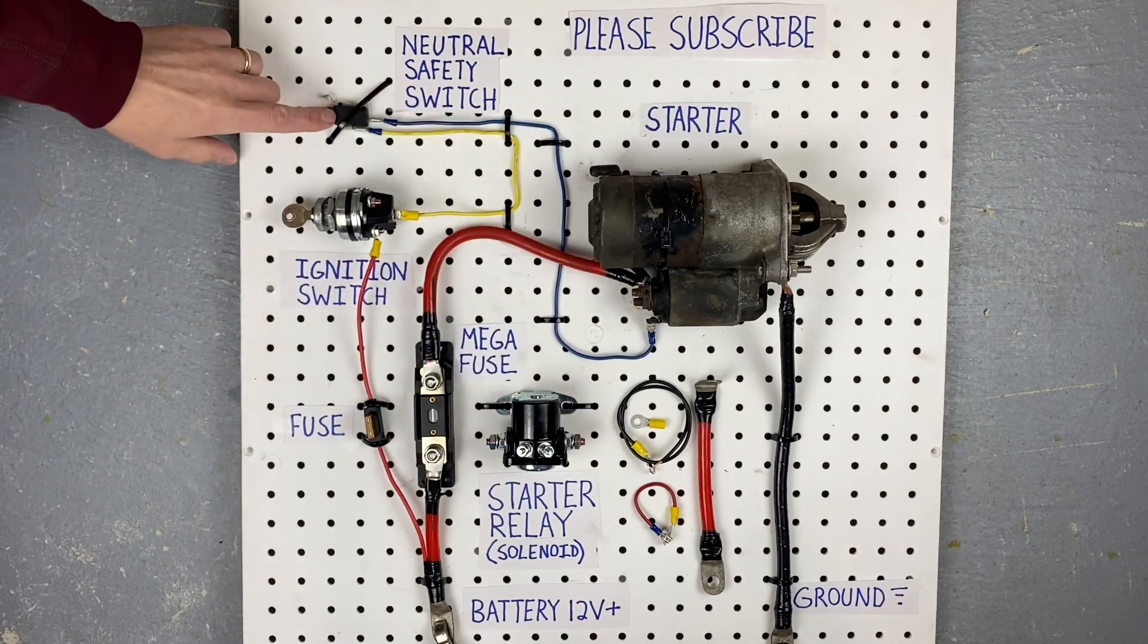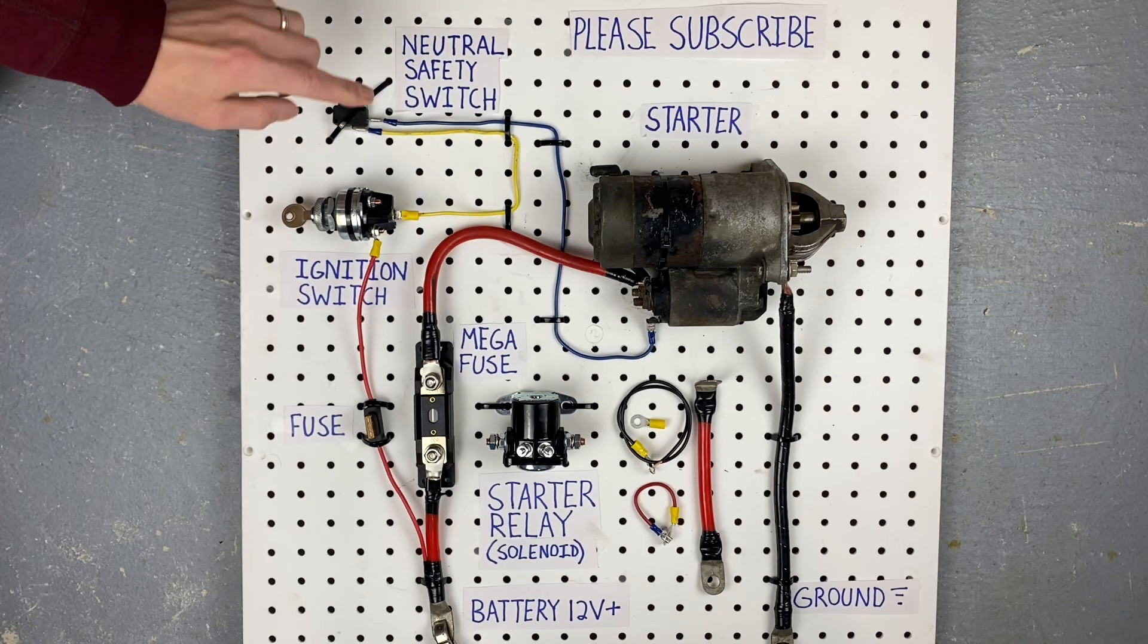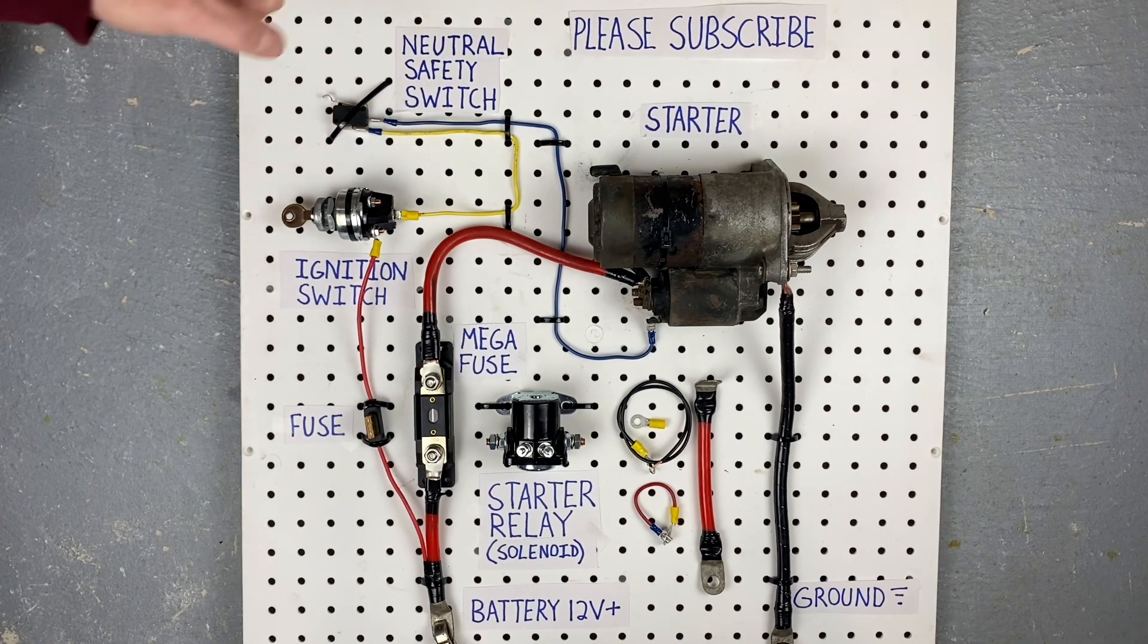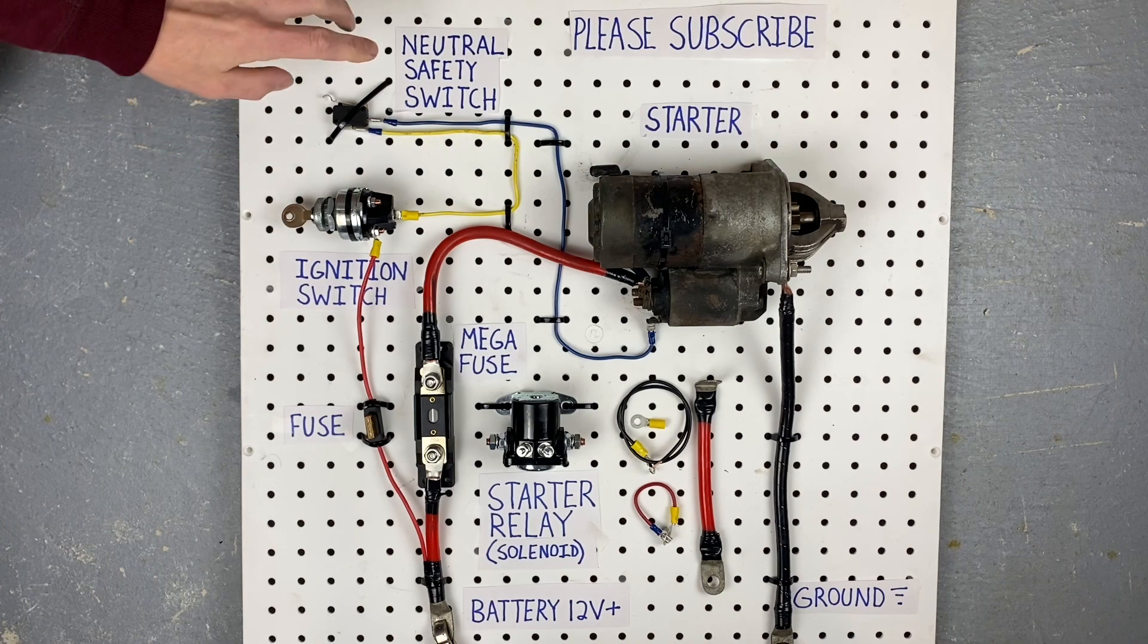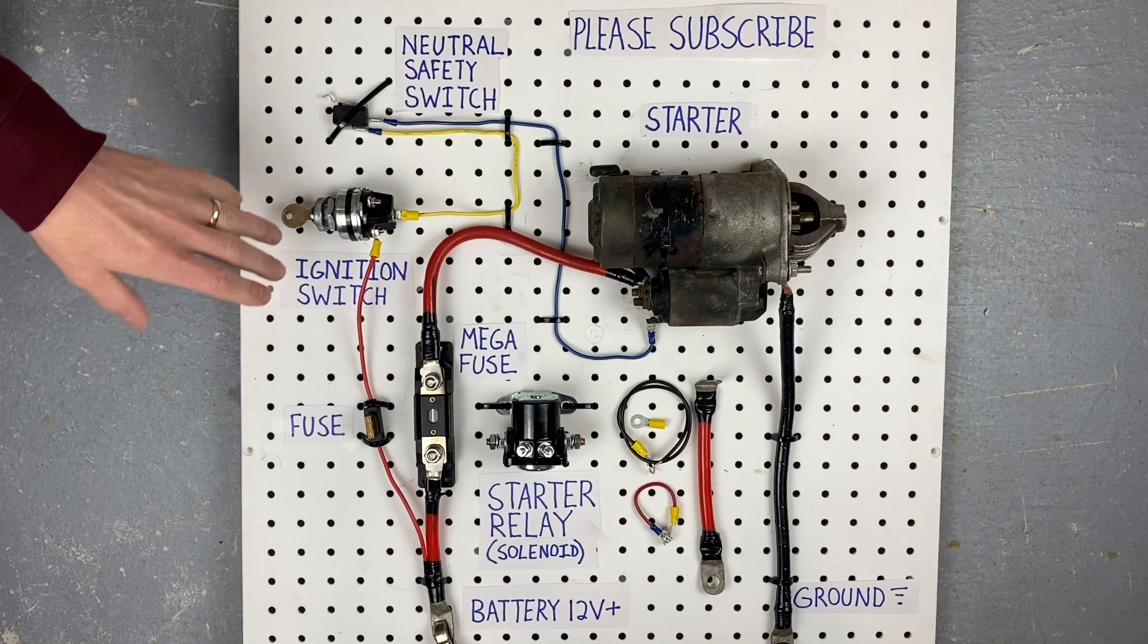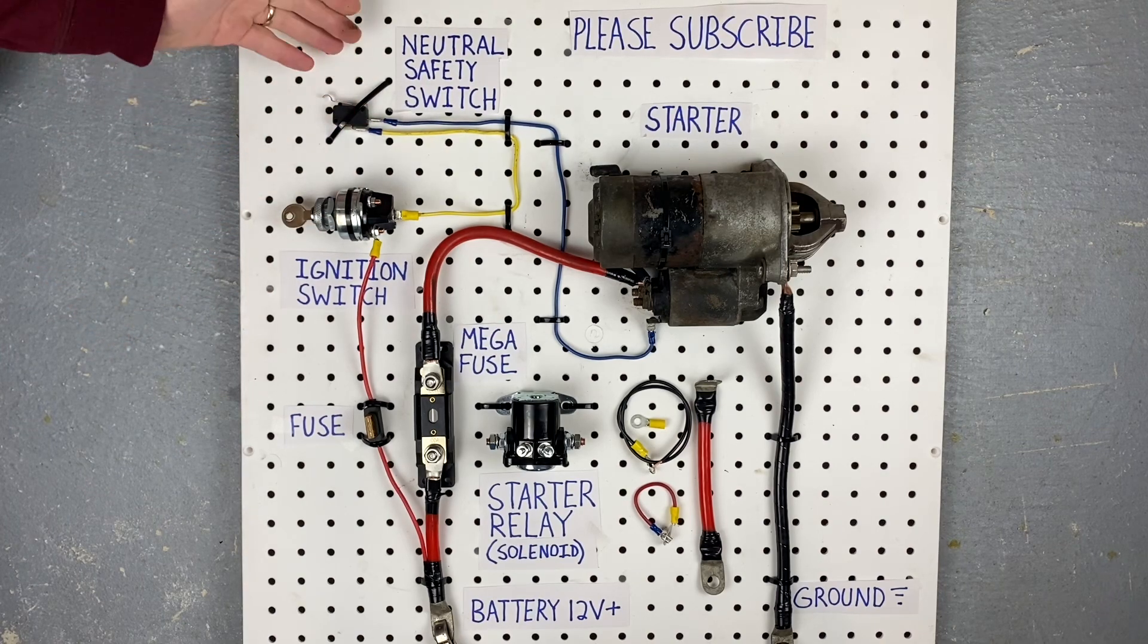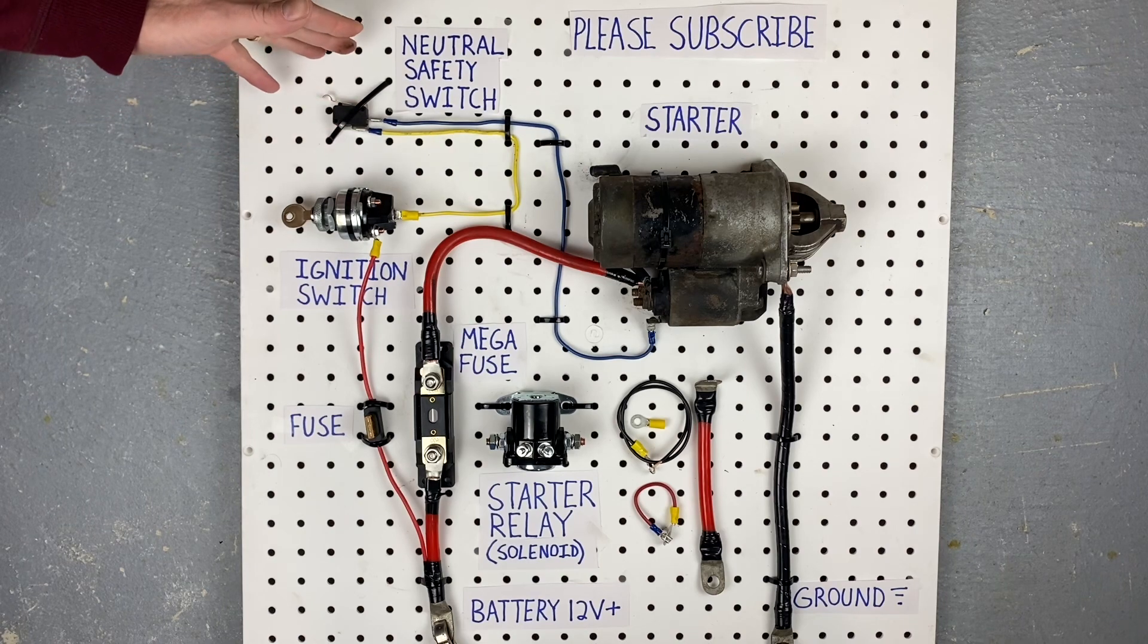Right here we have a neutral safety switch. Now these things come in a bunch of different shapes and sizes. This one happens to be from like a B&M ratchet style shifter, but these things are sometimes found on the steering column, sometimes in a console, sometimes down on the transmission itself. But this is like the simplest version. You'll see these used a lot in aftermarket shifters.